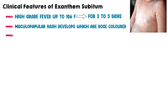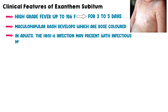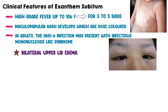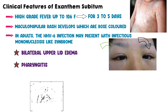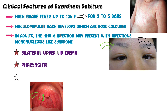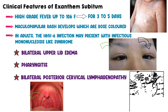In adults, the human herpes virus 6 infection presents with an infectious mononucleosis-type syndrome, whose features are bilateral upper lid edema, pharyngitis, and bilateral posterior cervical lymphadenopathy.